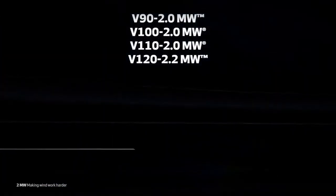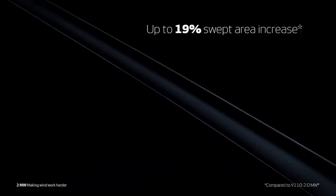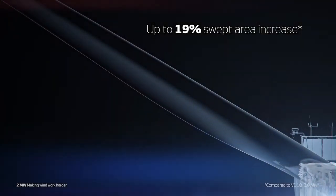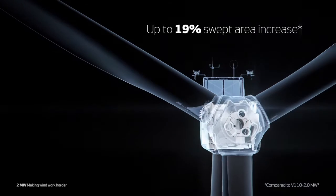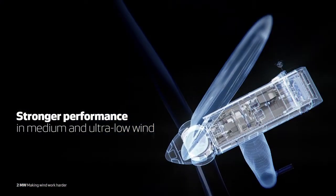With rotor sizes from 90 meters to 120 meters, the Vestas 2MW platform powers four turbine variants, now covering all wind conditions and strengthening performance in medium to ultra-low wind.